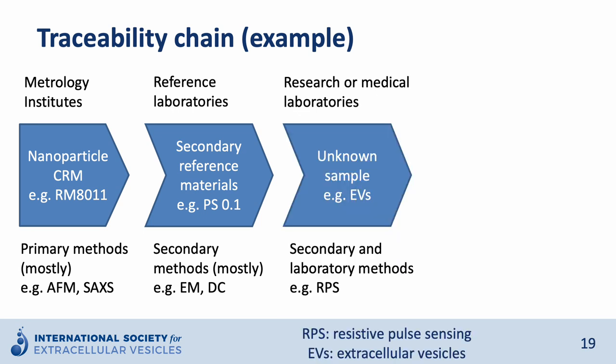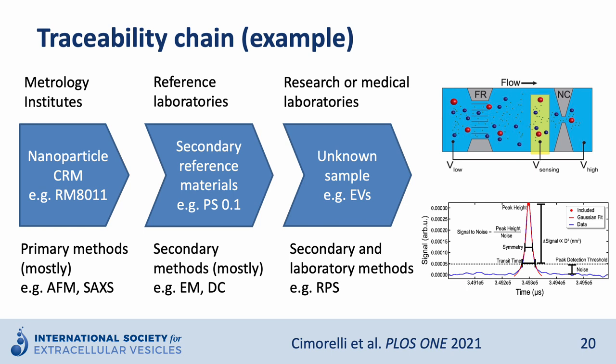On the next level we have the unknown sample, for example EVs. These measurements are performed in research or medical laboratories, usually using secondary and laboratory methods. One example is resistive pulse sensing, which is based on the Coulter principle. In RPS, particles pass through a nano constriction and cause an electric signal — a pulse — which is proportional to the volume excluded by the particles. To calibrate the pulse height to diameter, secondary reference materials made of polystyrene are usually used.